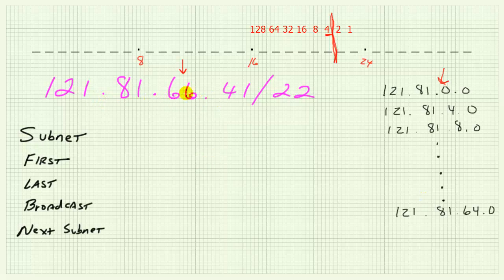Let's recap that. First we figured out the interesting octet — it's the third octet because our network prefix is 22 bits. The first 22 bits are network and the last 10 are host, with the dividing line drawn there. The least significant subnet bit weight position is four, which becomes the magic number, the interval, the subnet increment — the value by which subnets increment from one to the next. Starting at 121.81.0.0, then 121.81.4.0, and so on, counting by fours eventually gets us to 121.81.64.0.